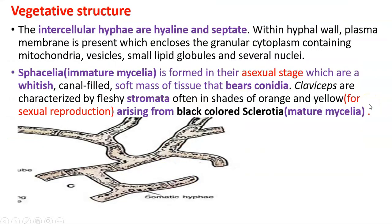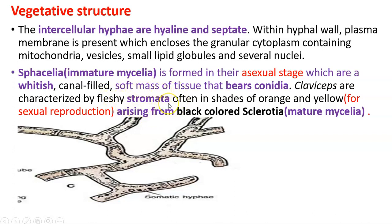The sphacelium is the immature mycelium — asexual reproduction is happening and the mycelium is not yet mature — it is whitish and gives rise to conidiophores bearing conidia. During sexual reproduction, this immature mycelium turns into a compact mass of black-colored hyphae called sclerotia — the mature mycelium. This sclerotia then gives rise to a fleshy structure called stroma, which is responsible for sexual reproduction through its cavity containing the perithecia.